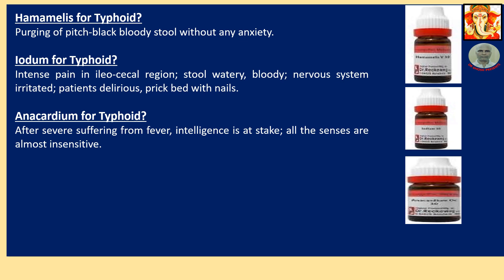Amomalism for typhoid: purging of pitch-black bloody stool without any anxiety — normally when blood passes from the body through stool, urine, or nose there is automatic anxiety, but this patient will show no anxiety. Iodum for paratyphoid: intense pain in the iliacal region, stool watery and bloody, nervous system irritated, patient delirious and picks at the bed with nails. Anacardium for typhoid: after severe suffering from fever, intelligence is at stake and all the senses are almost insensitive.